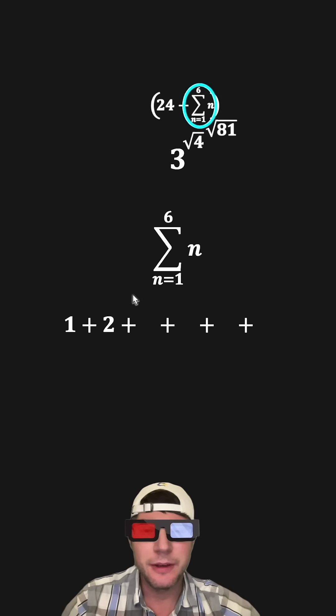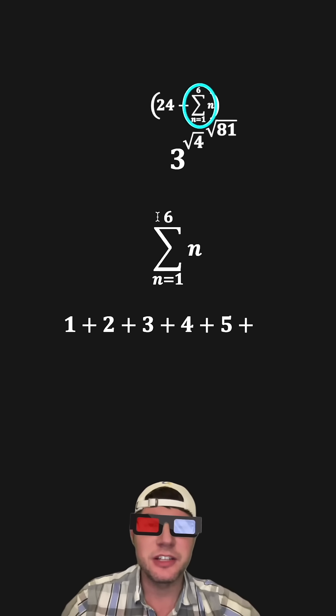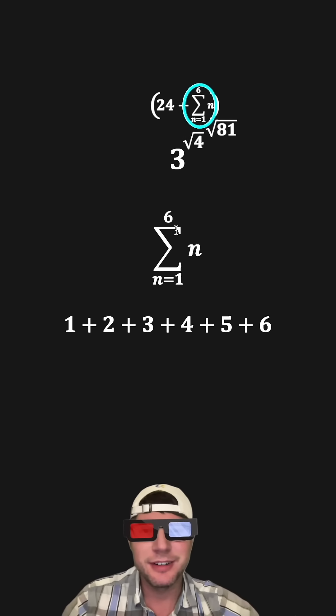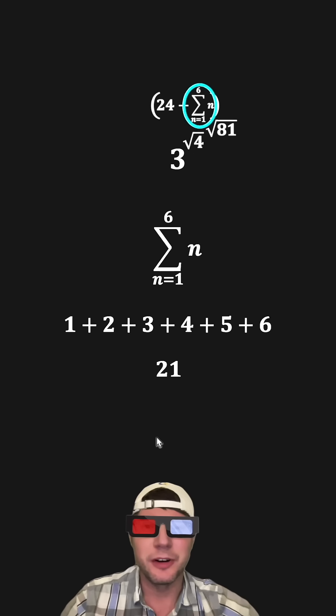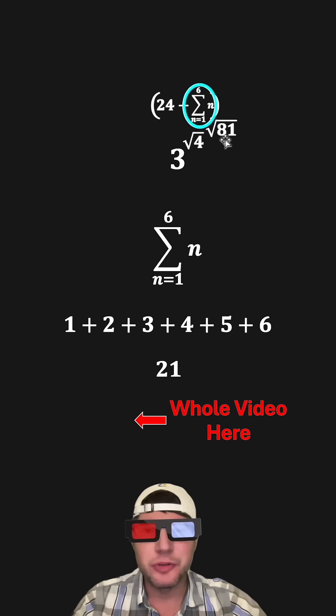And then we're going to plug in the next number, which is 3, and the next number, which is 4, and then 5. And then when we get to the top, after we plug it in, we're done. We stop when we get to this number. And then 1 plus 2 plus 3 plus 4 plus 5 plus 6 is equal to 21. So this sum is equal to 21.